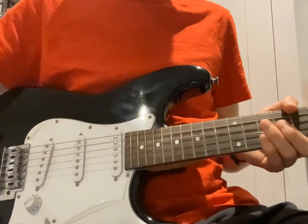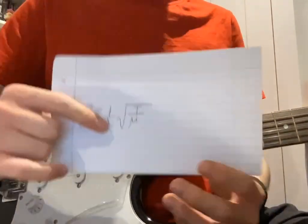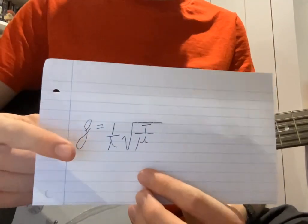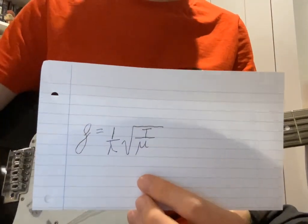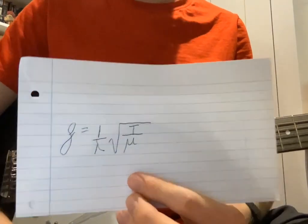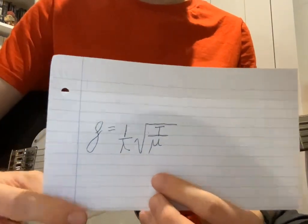So those are the different ways we can get different pitches on a guitar, as seen by the F equals one over lambda times the square root of T over mu equation. Thank you.